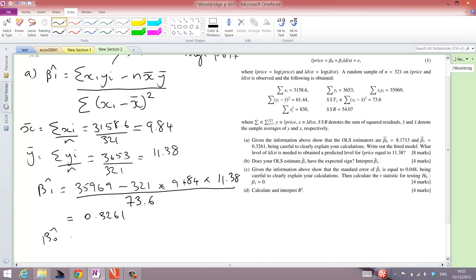Beta naught hat is our standard way of doing this. This is y bar minus beta 1 hat x bar, which is equal to 11.38 minus 0.3261 times 9.84, which is equal to 8.1713, as required. So, that's the first part of question A.